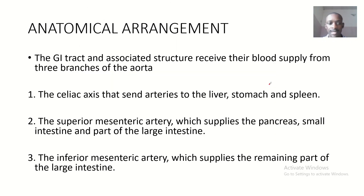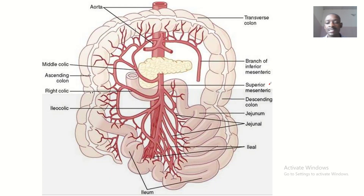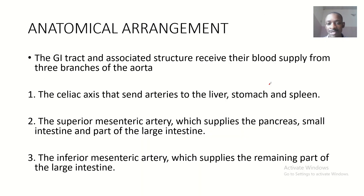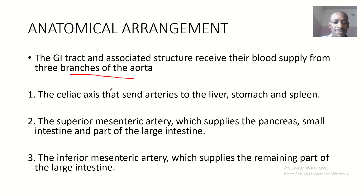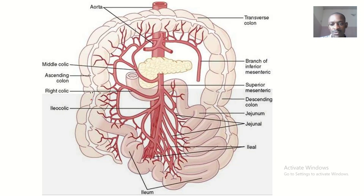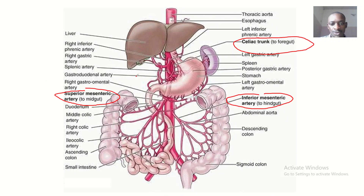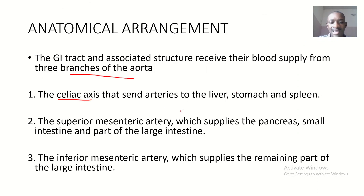Now let's discuss the anatomical arrangement of blood supply. The GI tract and associated structures receive their blood supply from three branches of the aorta. First, we have the celiac axis — also called the celiac trunk — which sends arteries to the liver, stomach, and spleen.